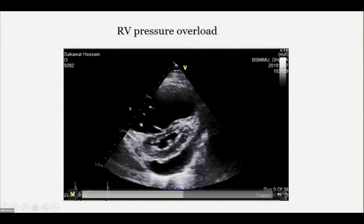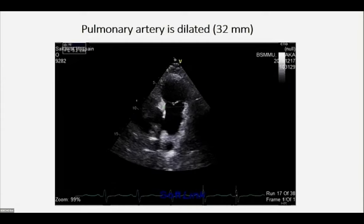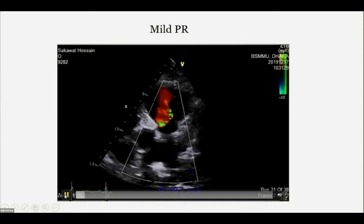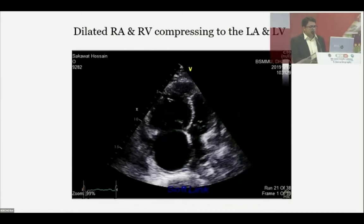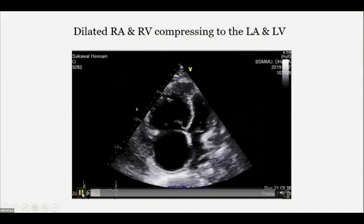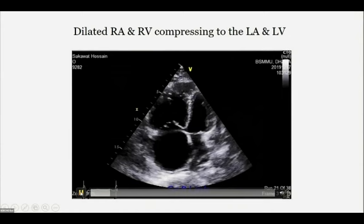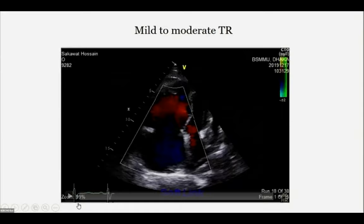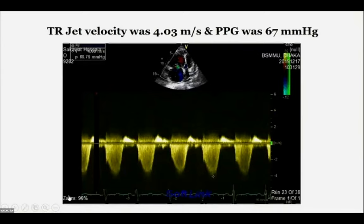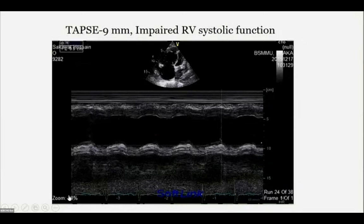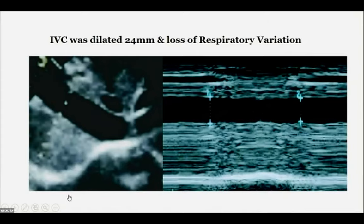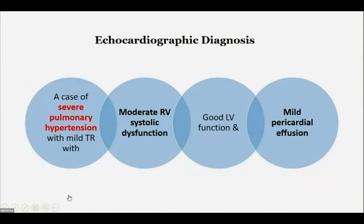Echocardiography: parasternal long-axis view showed huge RV dilatation with interventricular septum bulging and pericardial effusion. Normal LV dimensions with paradoxical septal motion and normal LV systolic function. Mild pericardial effusion. Color flow mapping showed mild TR. D-shaped LV indicating RV pressure overload. Pulmonary artery dilated at 32 mm. Mild pulmonary regurgitation, PRV velocity 2.3 m/s. Apical four-chamber view showed grossly dilated RA and RV with interventricular and interatrial septa bowing toward the left. Continuous wave Doppler across the tricuspid valve showed TR velocity of 4 m/s, peak gradient 67 mmHg. TAPSE 9 mm indicating impaired RV systolic function. IVC hugely dilated with loss of respiratory variation. Echo impression: severe pulmonary hypertension with moderate RV systolic dysfunction and mild pericardial effusion.